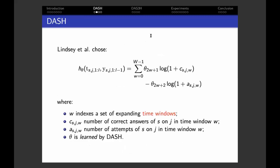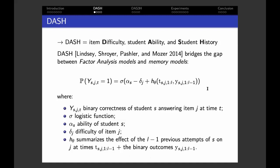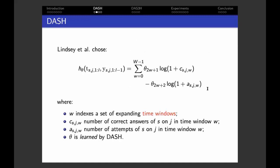Concerning this function h_theta, Lindsay et al. used this specific function here. This function uses a series of expanding time windows and counts the number of correct outcomes and attempts of the student on the item in each of these time windows. To be clearer, the alpha_s, delta_j, and theta parameters are learned by the DASH model based on student past performance data. Only the correct answer and attempt counts are given as input.